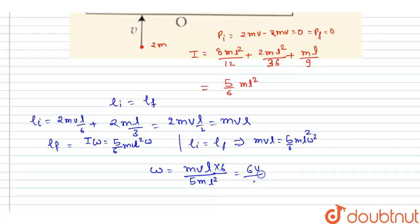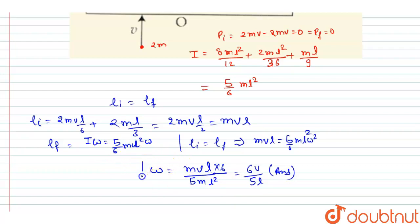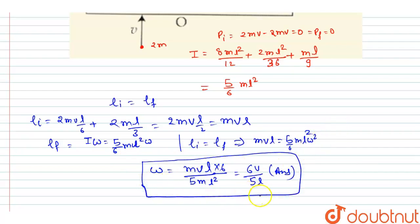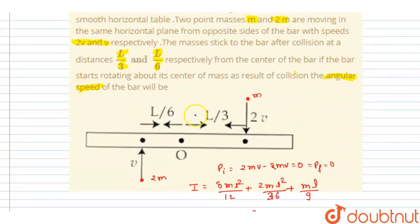Simplifying, omega equals 6v/5l. This is the answer. Note that to find the angular momentum of the system after the collision you write I times omega, rather than r cross p, since the system is in pure rotational motion. So the angular velocity is 6v/5l.